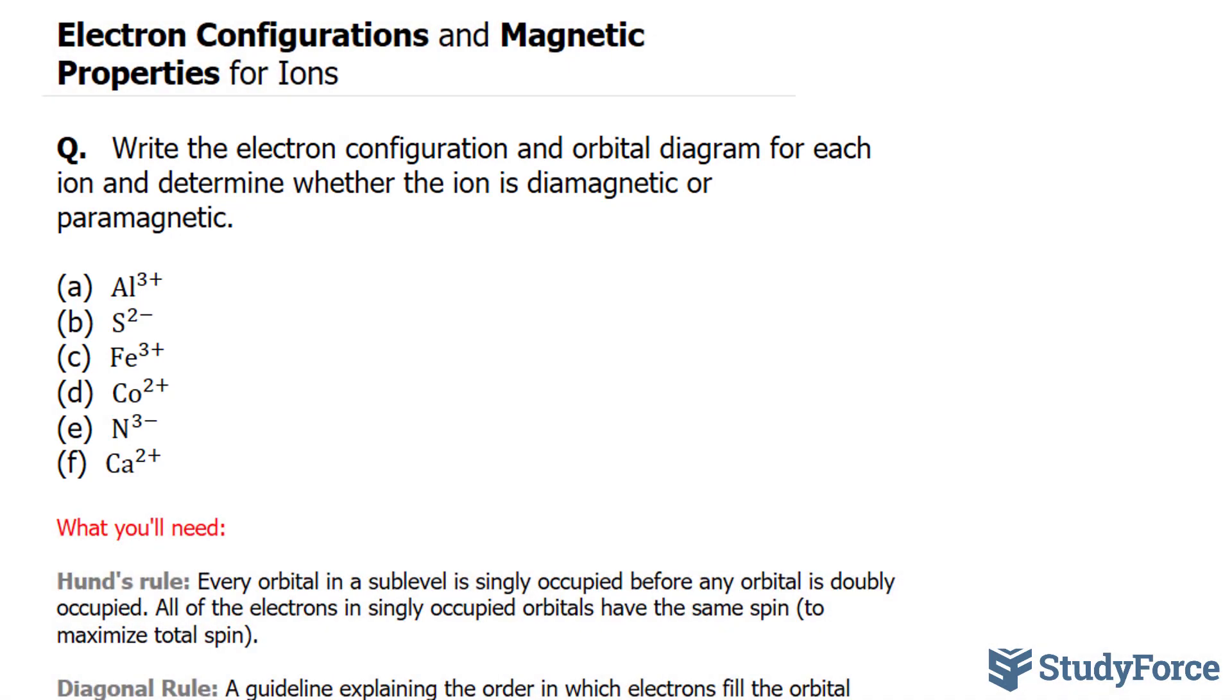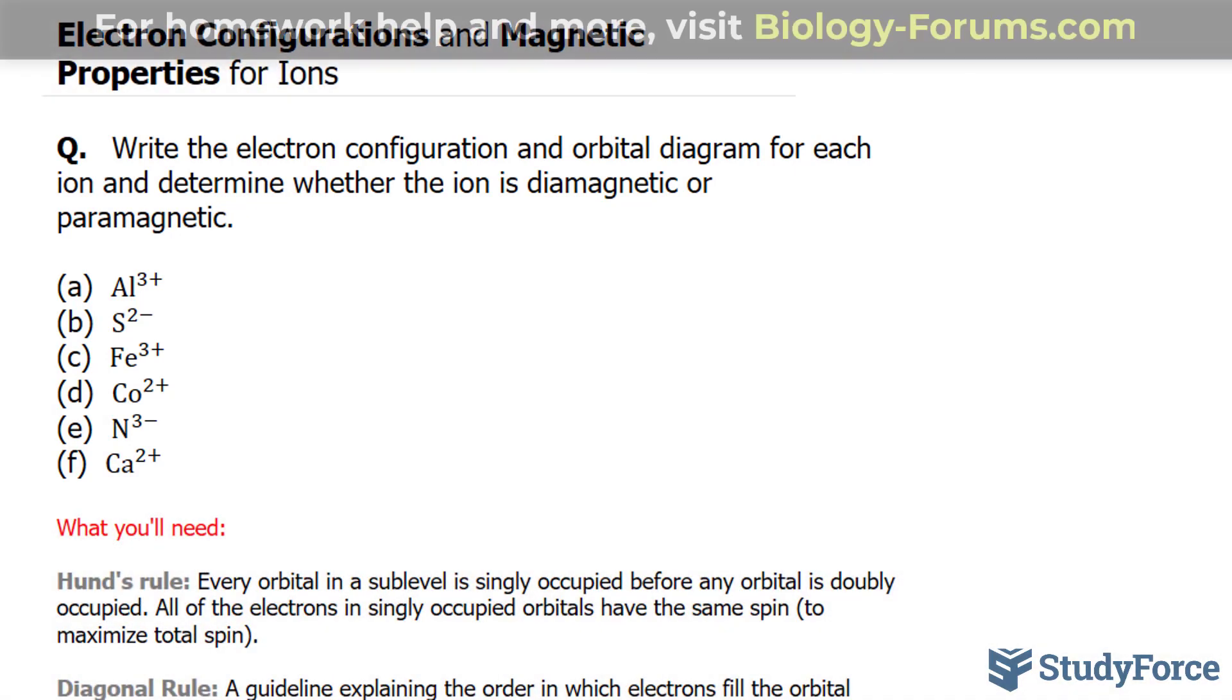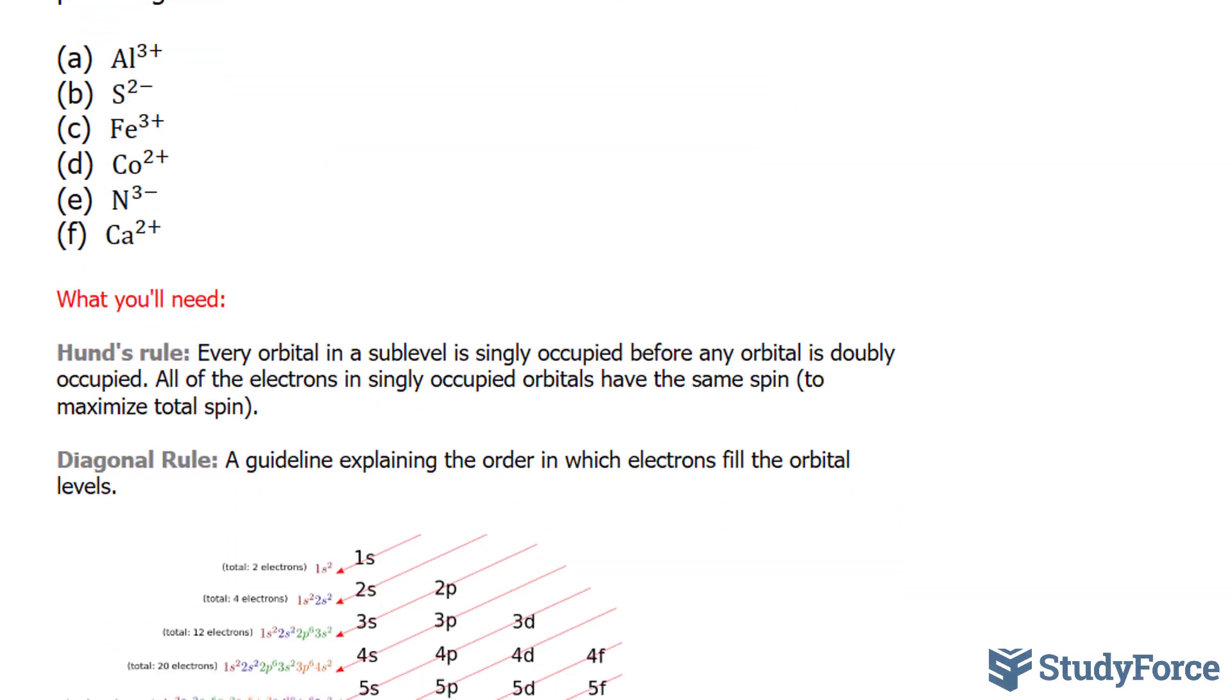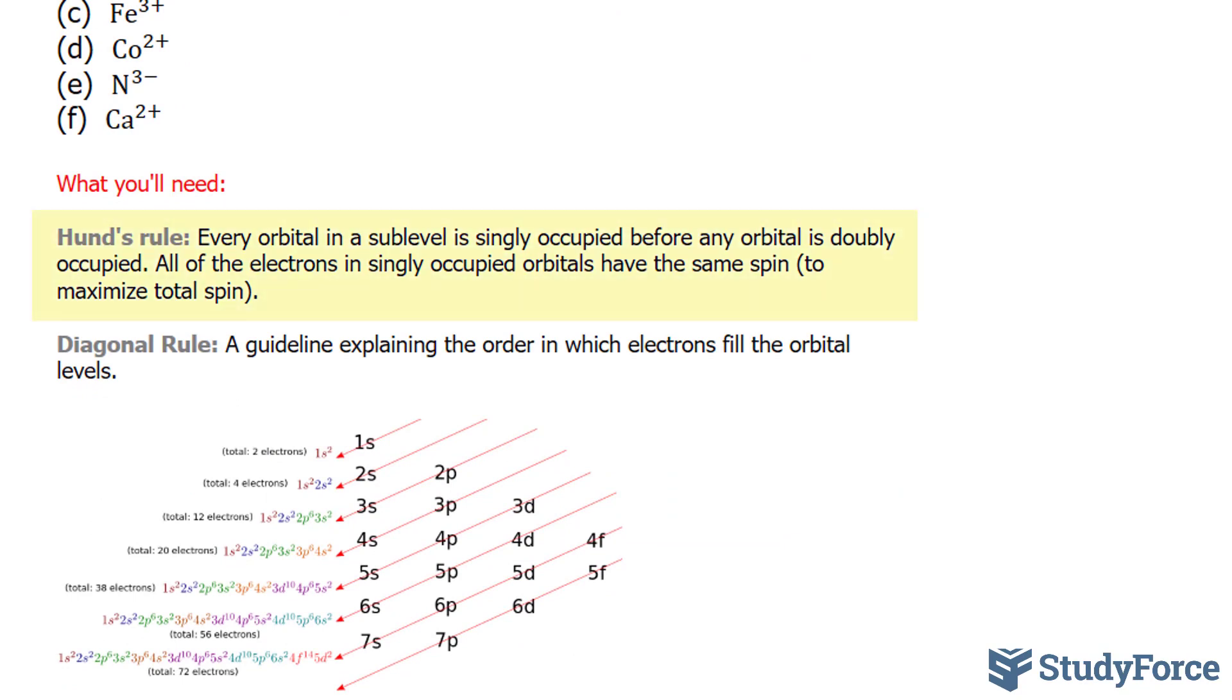Let's start with question A. We have aluminum 3+. The 3 plus tells us that aluminum has lost 3 electrons. So going back to what we learned in previous videos, we learned about Hund's rule, which tells us that every orbital in a sublevel is singly occupied before any orbital is doubly occupied. That will make more sense when we create our orbital diagrams. And we also learned about the diagonal rule, which is a guideline explaining the order in which the electrons fill the orbital levels.